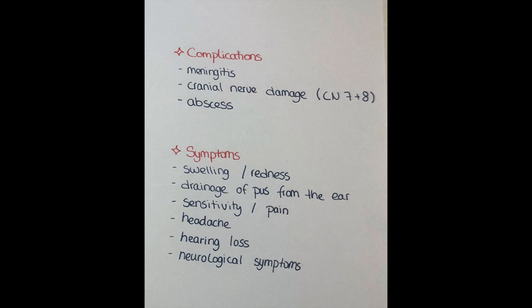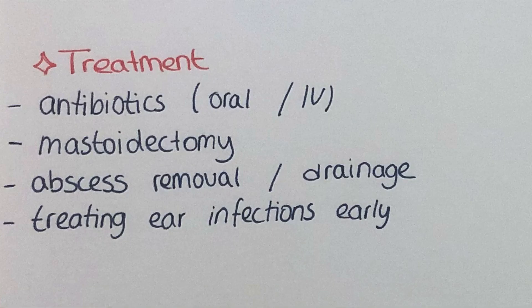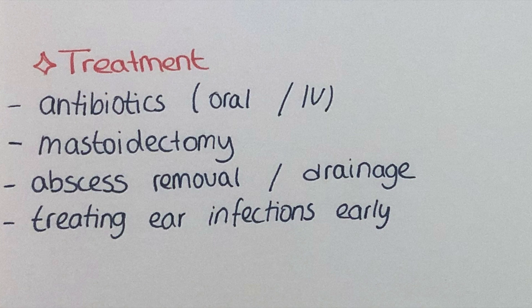Further spread into the cranial cavity can lead to meningitis. Sometimes patients develop abscesses which need to be drained. Treatment usually consists of giving the patient antibiotics, either orally or, if oral antibiotics are not sufficient, IV antibiotics. However, since the infection is within the bone — within the mastoid process of the temporal bone — antibiotics do not always work. In some rare cases, doctors may even have to perform a mastoidectomy to remove that part of the temporal bone. If the patient develops an abscess, it may need to be drained or surgically removed. The best treatment is to prophylactically avoid lingering ear infections by treating ear infections early.